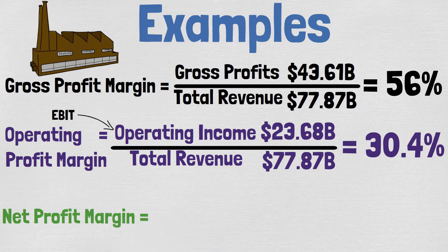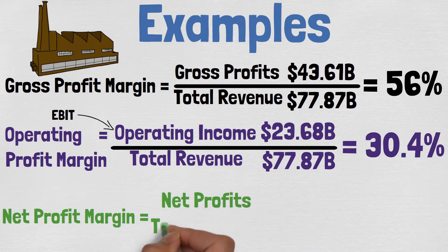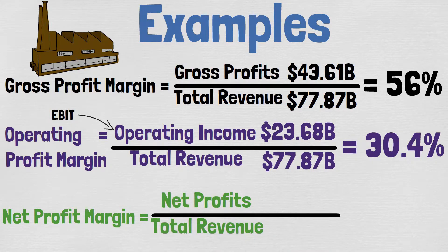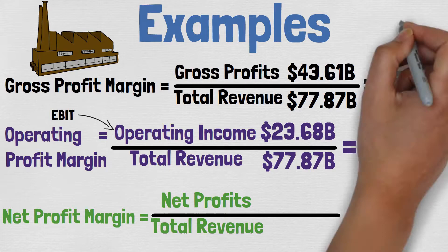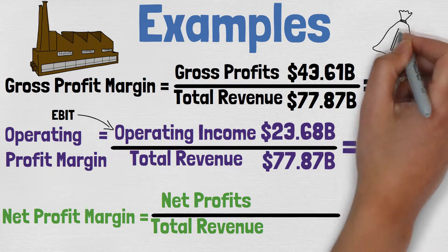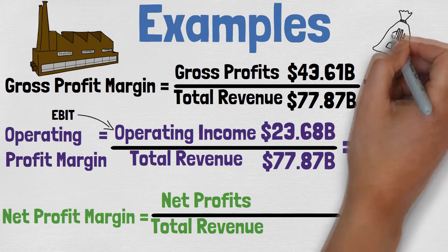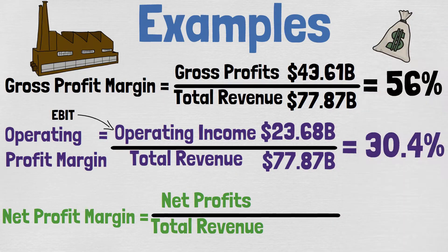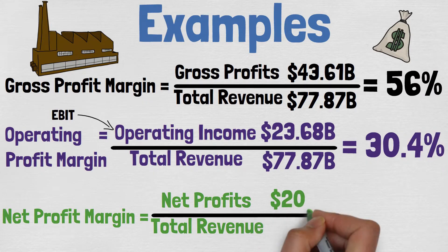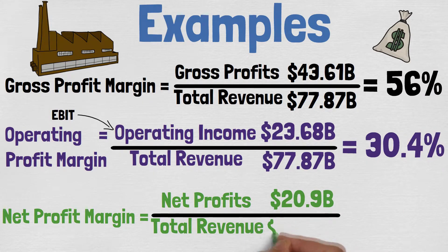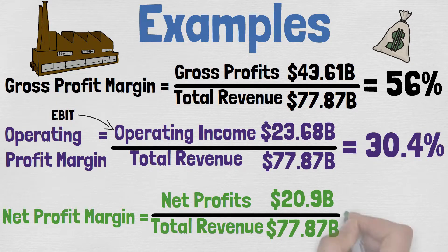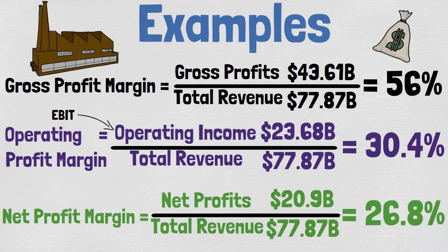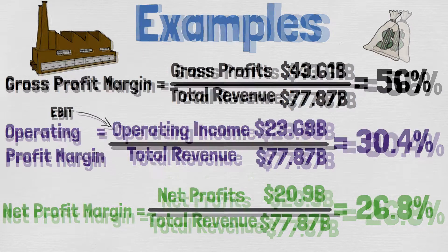To calculate the net profit margin, you want to divide the net profits by the total revenue. Net profit is the final amount of profits left to the company after all the costs, interest, taxes, and so on have been paid. For Intel, the net profits for 2020 were $20.9 billion. When we divide that by the total revenue of $77.87 billion, we get a net profit margin of 26.8%.